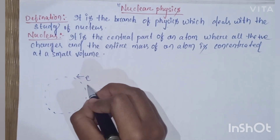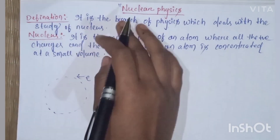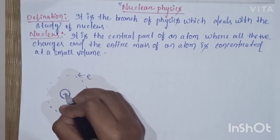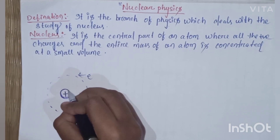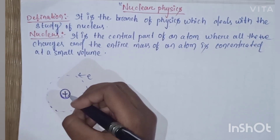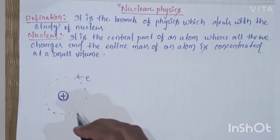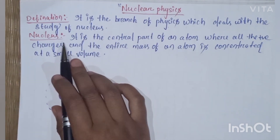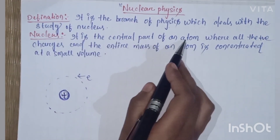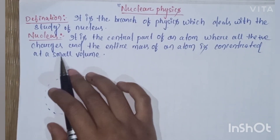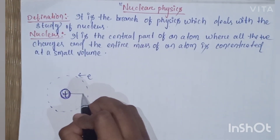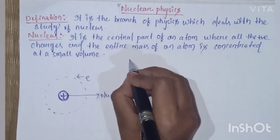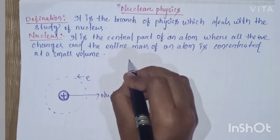In this chapter we have studied more about the nucleus. The nucleus is the central part of an atom where all the positive charges and the entire mass of an atom are concentrated at a small volume. In this chapter we will study the constituents of the nucleus.